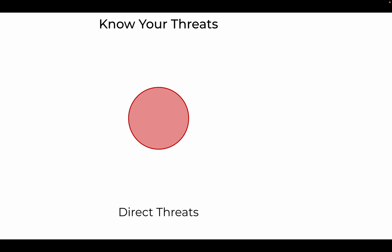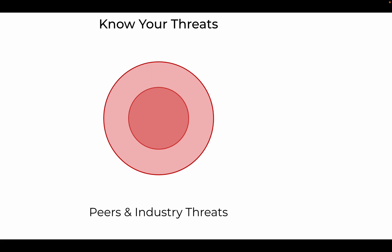The first and typically highest-scored category involves direct threats to the organization — threats the organization knows they certainly care about, usually as a result of directly observing a suspected actor group or malware in real-world incidents via their telemetry or log data. The second category involves inferred threats, usually based on analysis of threats impacting organizations similar to your own — typically others within the same industry.